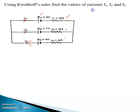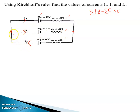We have the loop rule: summation of IR plus summation of E — where E means EMF — is equal to zero. This is the loop rule. First, we have to apply the junction rule. There are two junctions. At this junction, I3 is the incoming current and I1 and I2 are outgoing currents. So we can write: I3 = I1 + I2. This is our first equation from the junction rule.